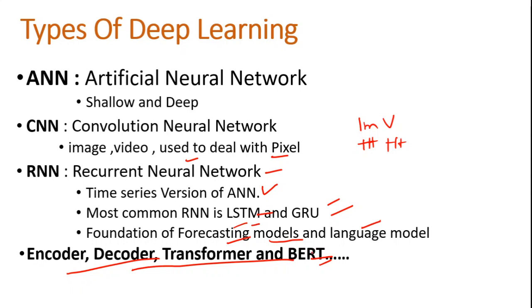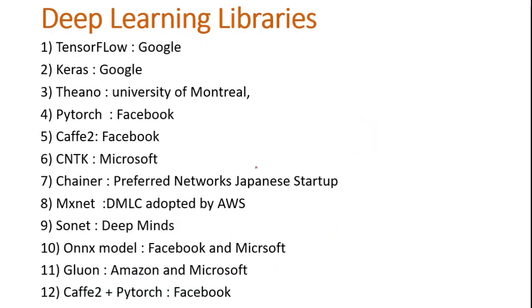After these three types we have encoder-decoder, Transformer, and BERT — these are all used in natural language processing. Now, the deep learning libraries: the most important is TensorFlow, developed by Google. It uses static graphs, which is considered a drawback. I'll explain all the libraries in detail in the next video.